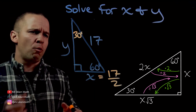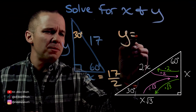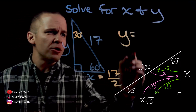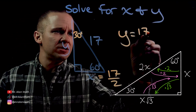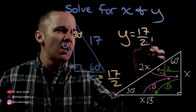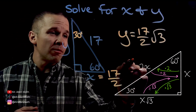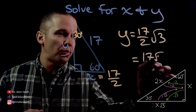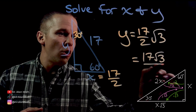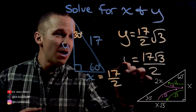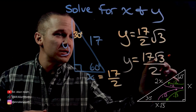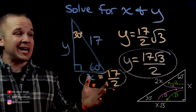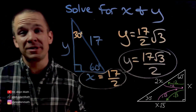Now for my Y. Y is going to be root three times larger, so I'm going to take 17 over two and multiply by root three. We'd normally write this as 17 root three over two. We've got our Y and our X — that's pretty dope.